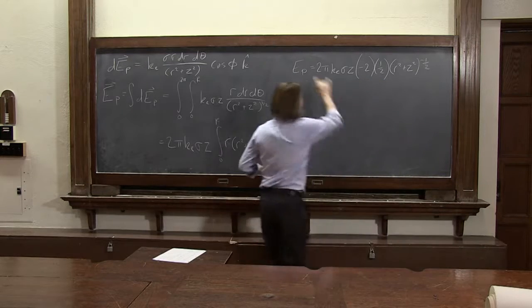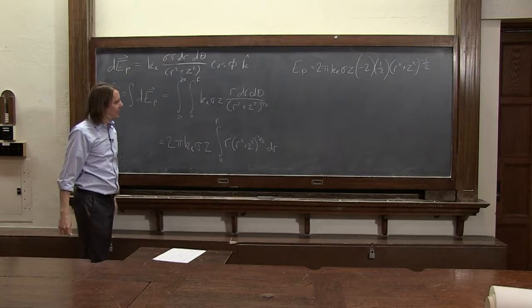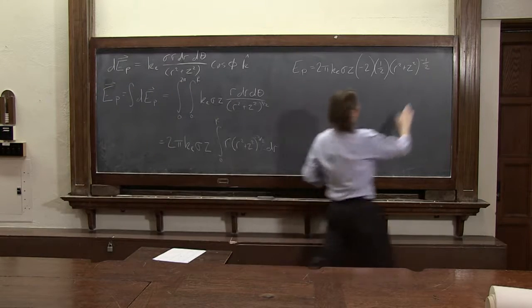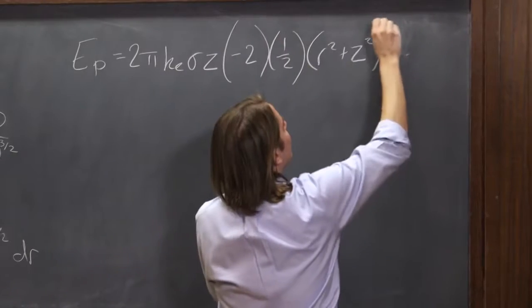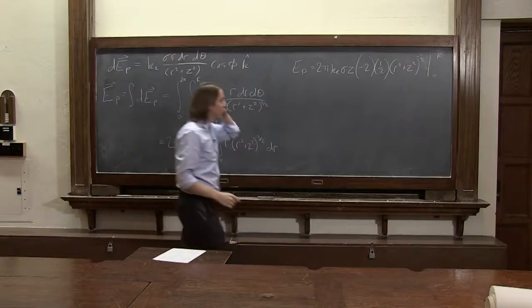I like doing these integrals better writing it out this way than having the square root things on the bottom. It just depends on how you want to do it. And that's evaluated from 0 to r. This is to the minus 1 half evaluated from 0 to r.